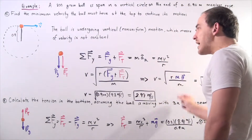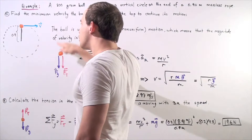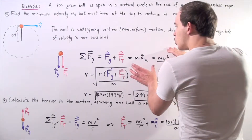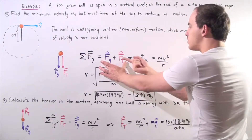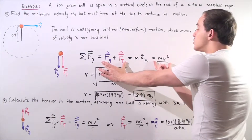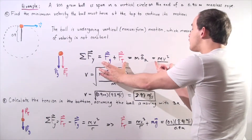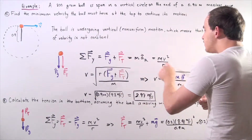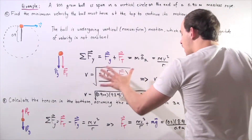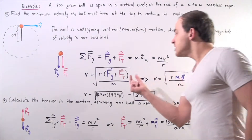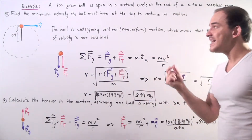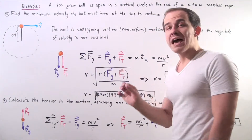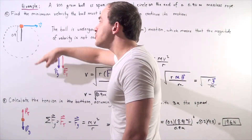The magnitude as well as direction of velocity changes as the ball undergoes vertical motion. So we have the two forces equal to mass times V-squared over R. Rearranging and solving for velocity, we bring R over, divide by M, and take the square root. Now, because we're looking for the minimum velocity, that implies there is no tension in the rope at the top.